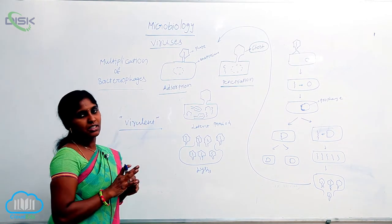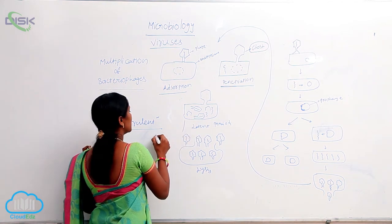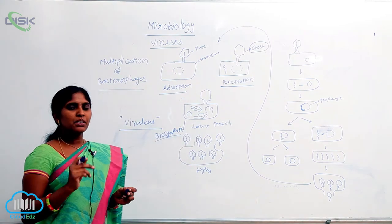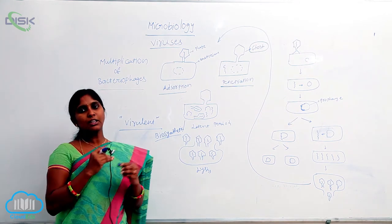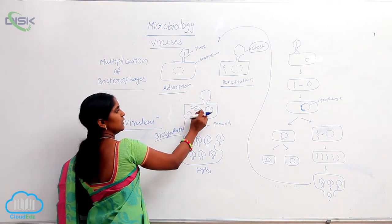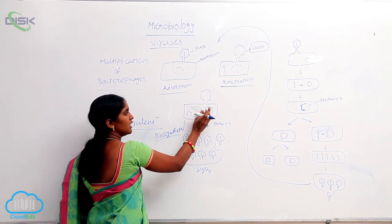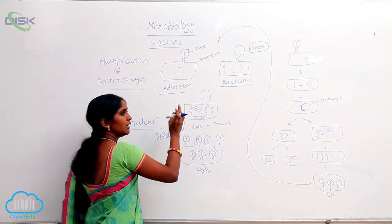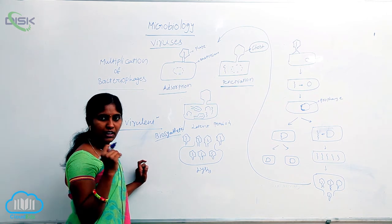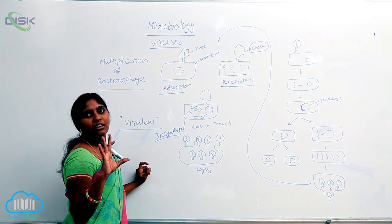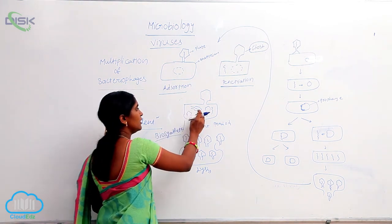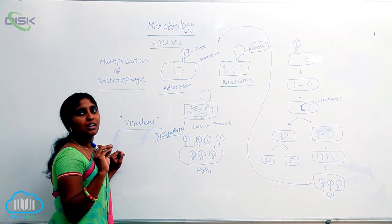The next stage is the latent stage, which is a biosynthetic stage. The purpose of entry is for multiplication, production, and replication of viruses. The viral DNA is entered inside of the bacteria. When it is entered, the bacterial DNA becomes inactive — sometimes it disintegrates also. The viral DNA shows dominance, and the remaining viral particles are synthesized. That is why this stage is called the biosynthetic stage.